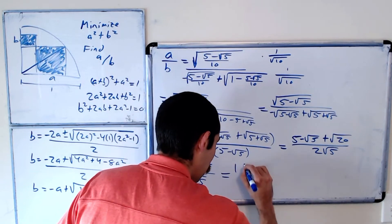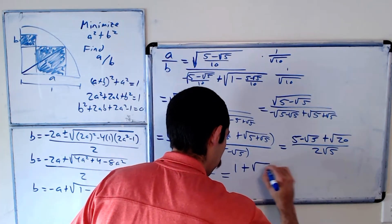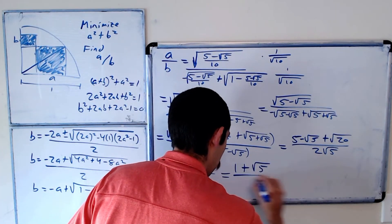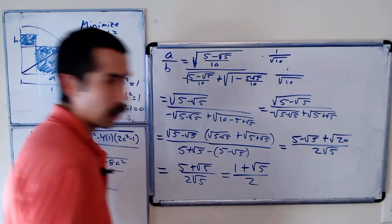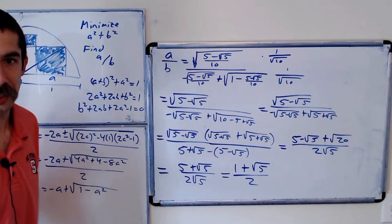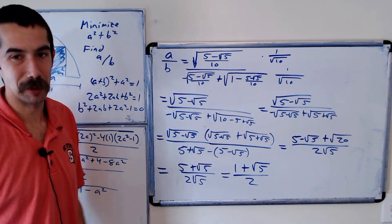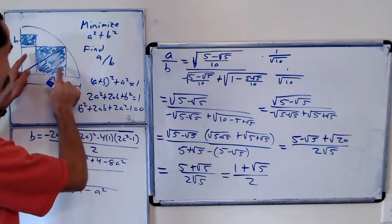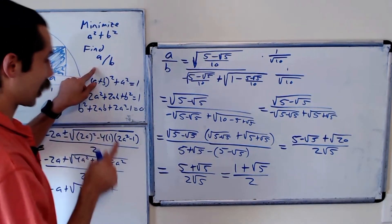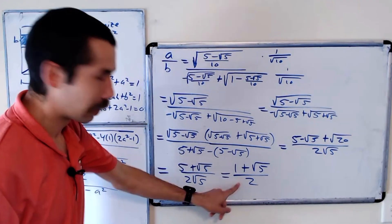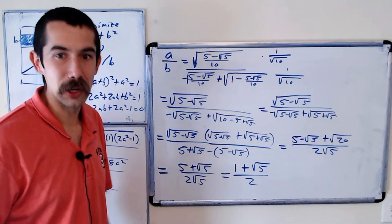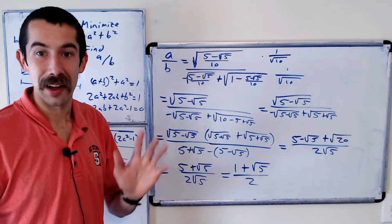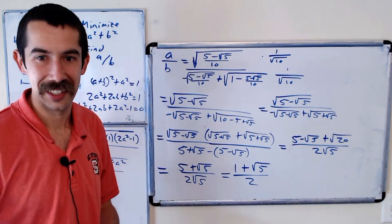So a/b = (5 + √5) / (2√5). Dividing each term by √5 and simplifying gives (1 + √5) / 2 — the golden ratio! Minimizing this area configuration yields the golden ratio. Thanks for watching.